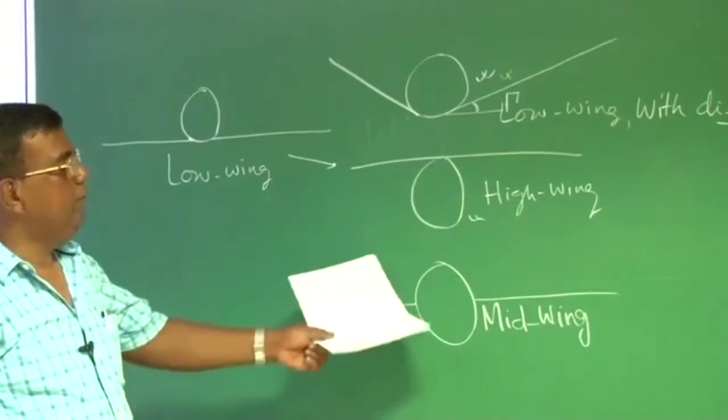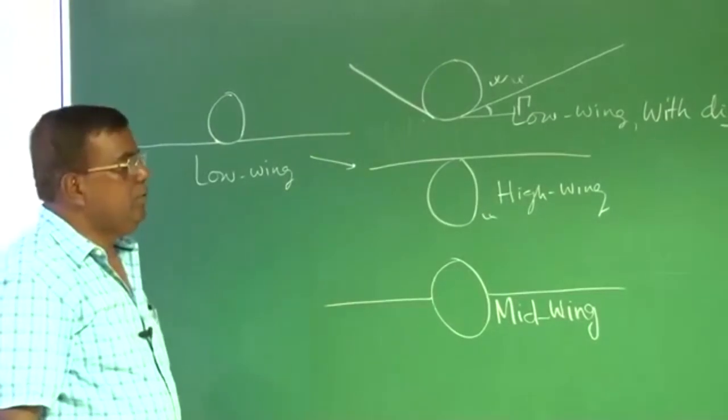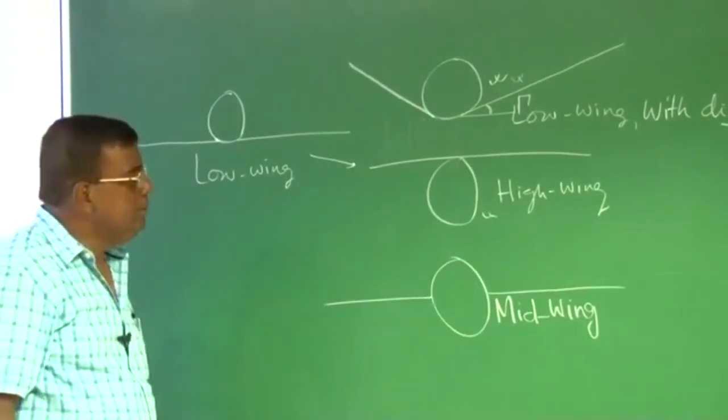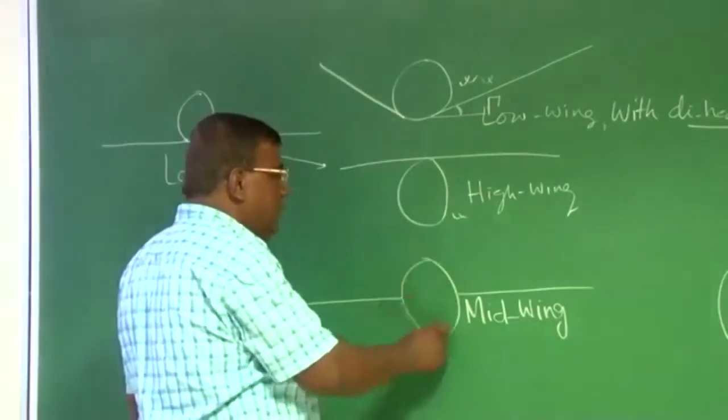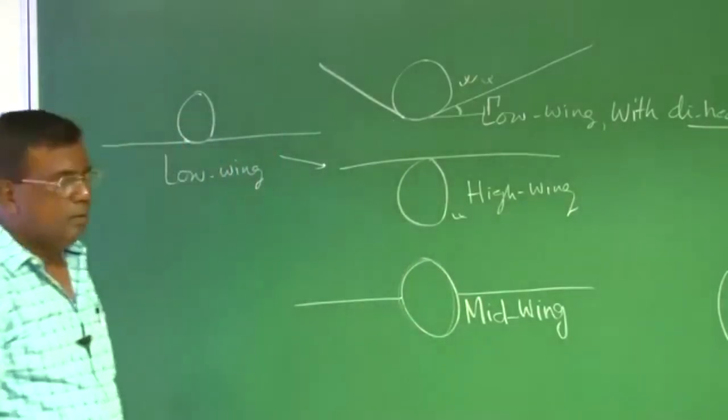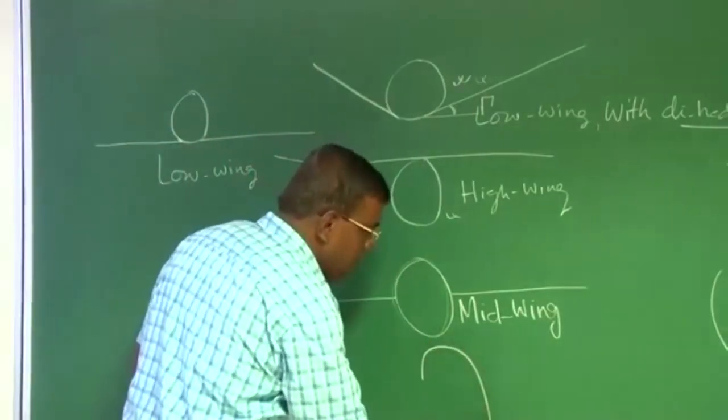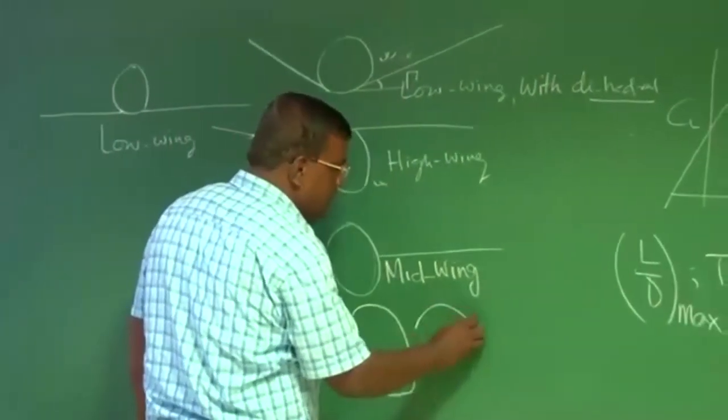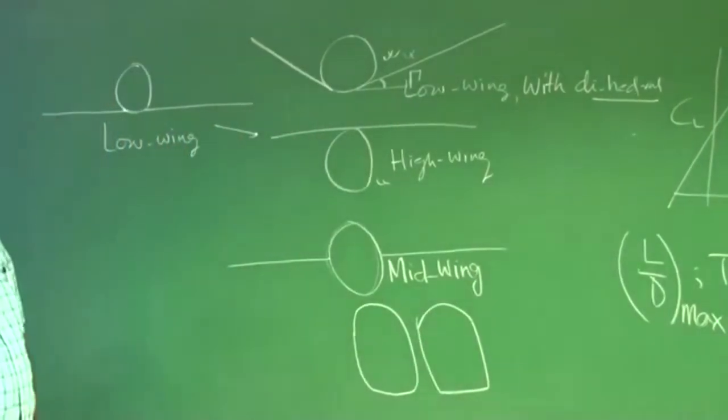Mid-wing, of course, you see from the symmetric mid-section of the fuselage, theoretically speaking. But you will find never this shape is completely circular. Typical shape could be something like this. It could be something like this. Depending upon fuselage requirement, other requirements.